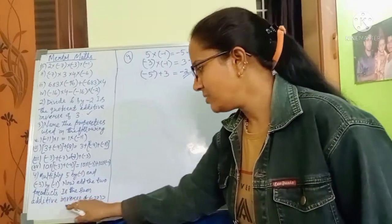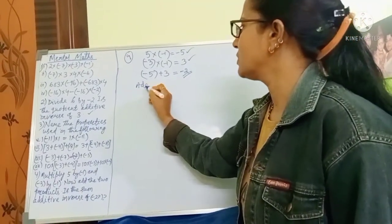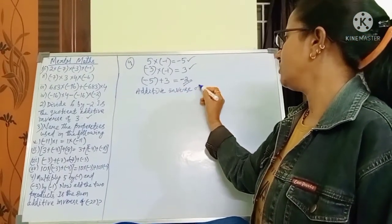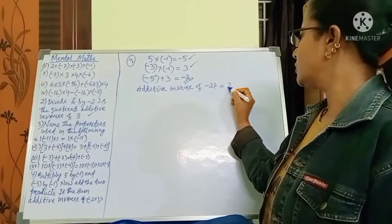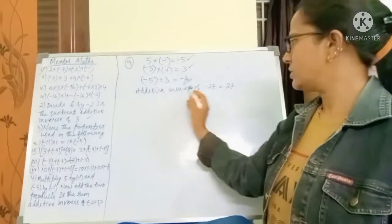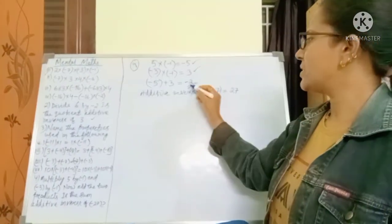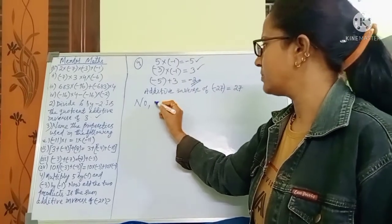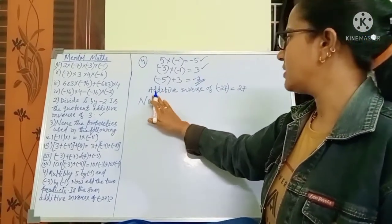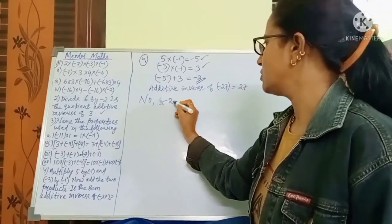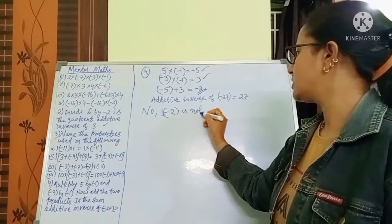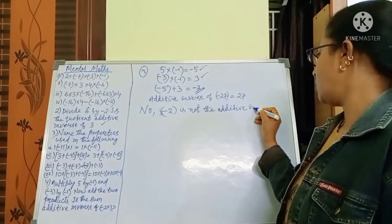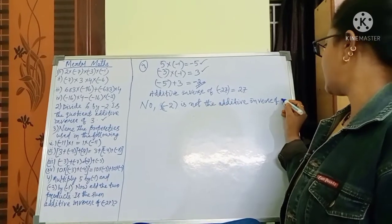The third part asks: is the sum the additive inverse of minus 27? The additive inverse of minus 27 is 27. But our answer is minus 2, which is not 27. So no, minus 2 is not the additive inverse of minus 27.